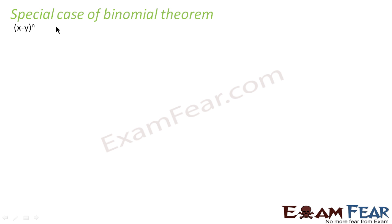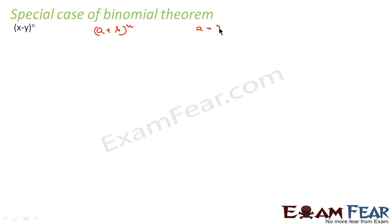The first special case is (x - y) to the power n. The normal case we developed was (a + b) to the power n. So what we will do here is replace a with x and b with minus y.